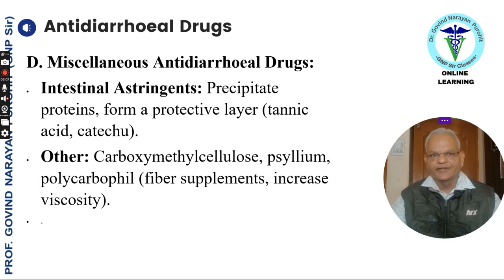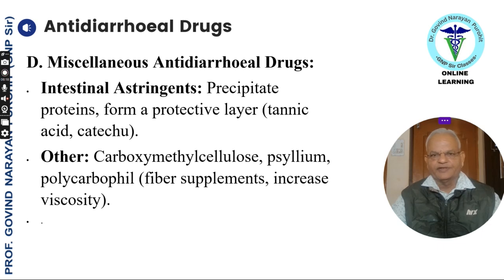The intestinal astringents precipitate proteins and form a protective layer — examples include tannic acid and katechu. Other agents include carboxymethylcellulose, psyllium, and polycarbophil, which are fiber supplements that increase viscosity.